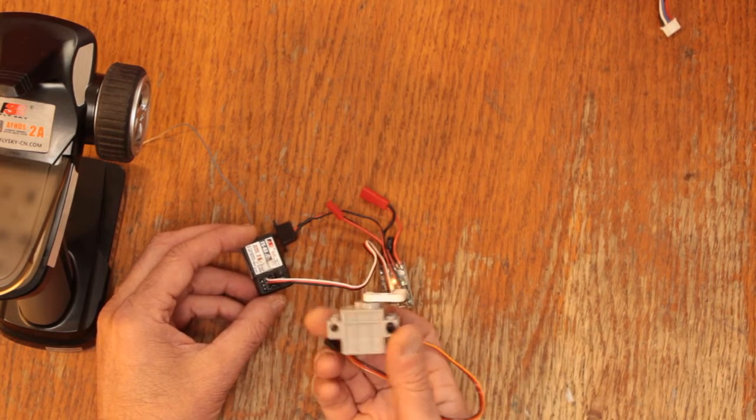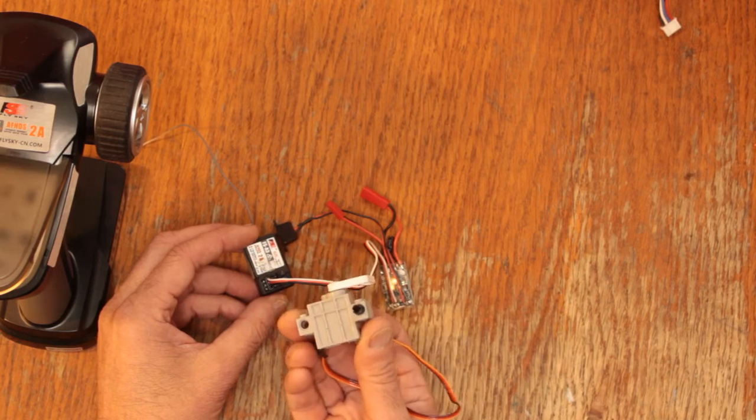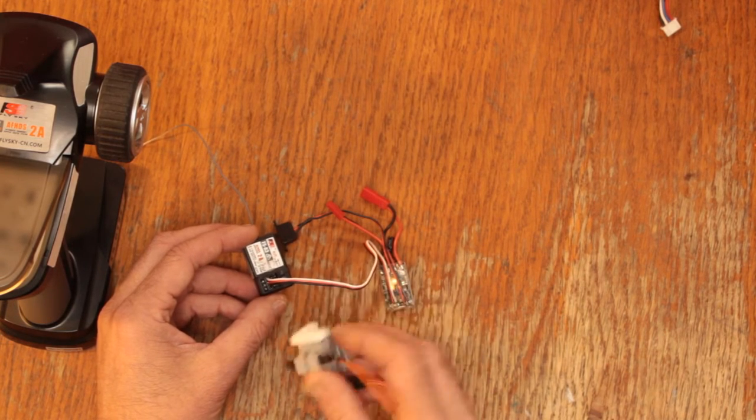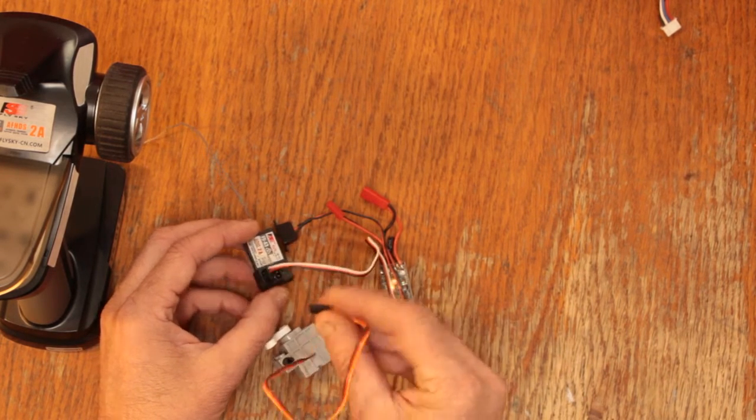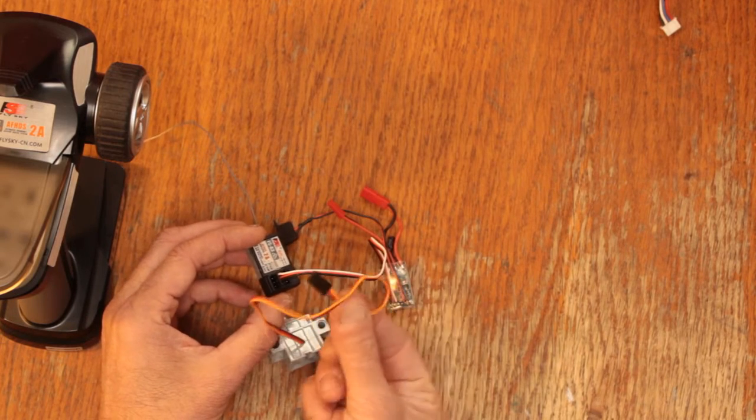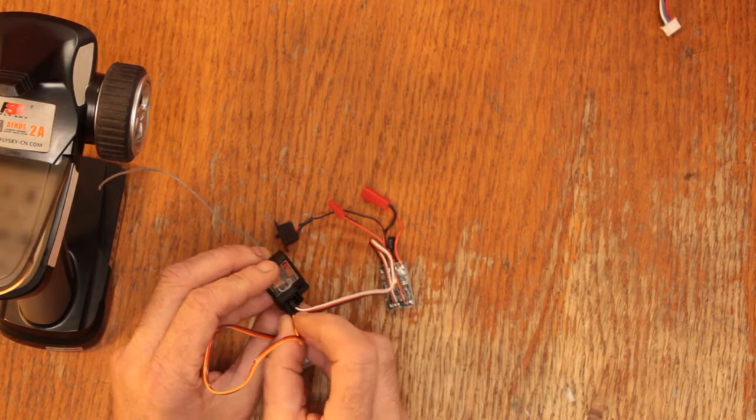This company also sells a couple other products that are just like this so they have a motor and a couple of servos so you can check that out but the brown wire on here is going to be negative so that's going to go on the right hand side.